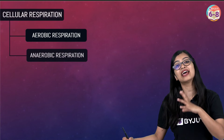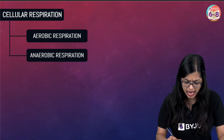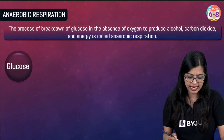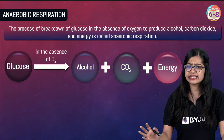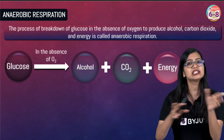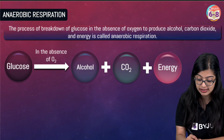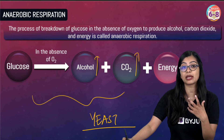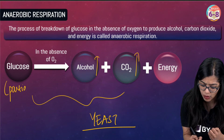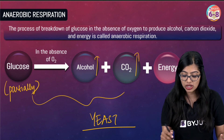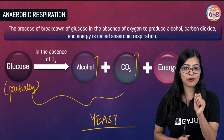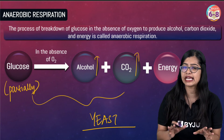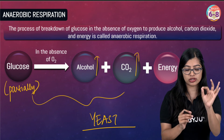The other kind is anaerobic respiration. Anaerobic respiration is a kind of respiration wherein breakdown of glucose takes place in the absence of oxygen, or in the temporary lack of oxygen. Energy is given out, but relatively less than in aerobic respiration. This kind of respiration takes place in some organisms like yeast, where alcohol and carbon dioxide are given out as by-products. Glucose here is only partially broken down — there is no complete breakdown, which is why the amount of energy obtained is relatively less.